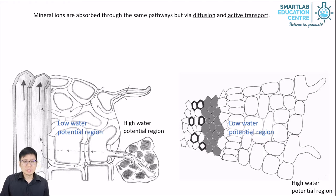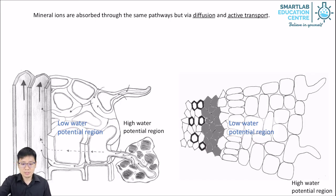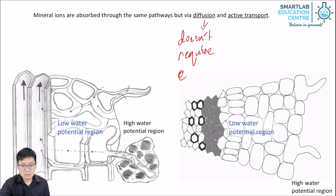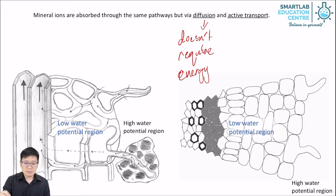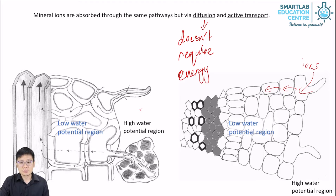How about mineral ions? Mineral ions are absorbed through the same pathways but via diffusion and active transport. Diffusion is a process that doesn't require energy — it only requires a concentration gradient favorable to it. If the plant has less mineral ions inside the cells and the soil has more, there's a concentration gradient whereby the ions on the outside will move into the cell. The water moves in by osmosis but ions move in by diffusion.